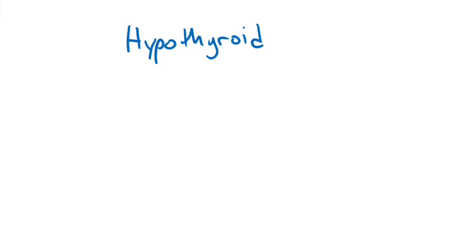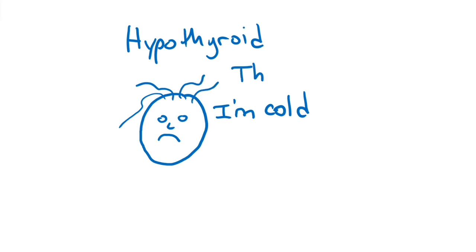All right benign conditions of the thyroid include hypothyroidism and hyperthyroidism. Let's start with low thyroid function or hypothyroidism. Clinical manifestations of low thyroid function are cold intolerance, thinning hair, and a slow heart rate.